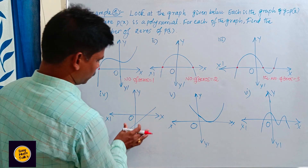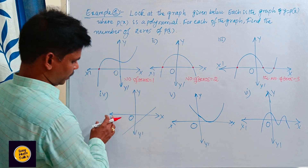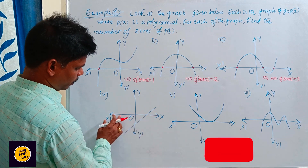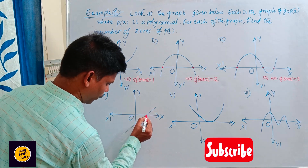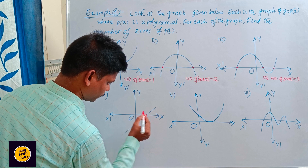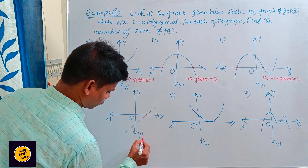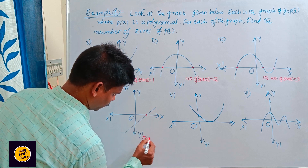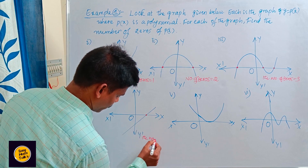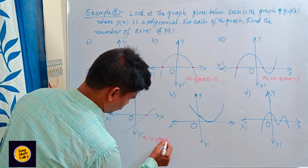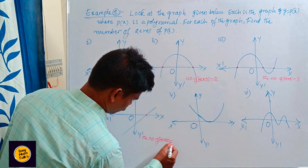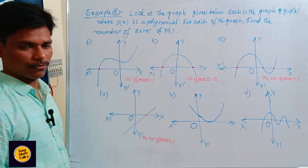See this one. On the x-axis, the graph is intersected at one point. So the number of zeros is equal to one.